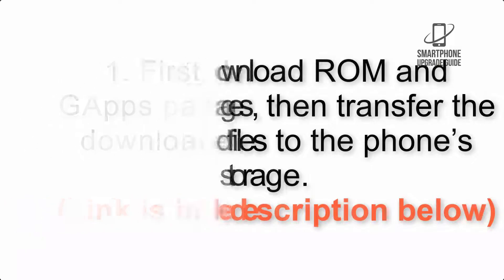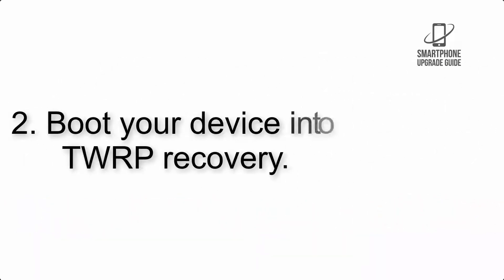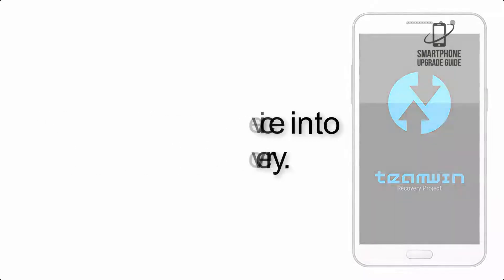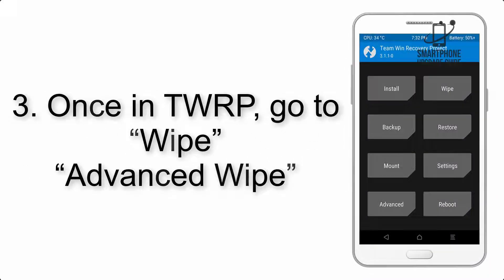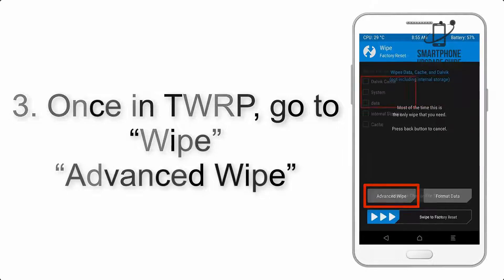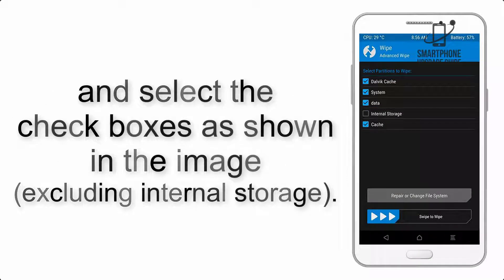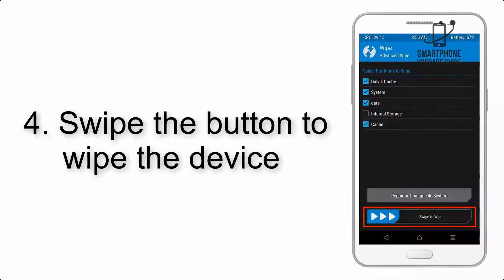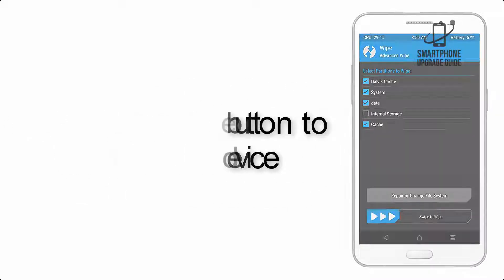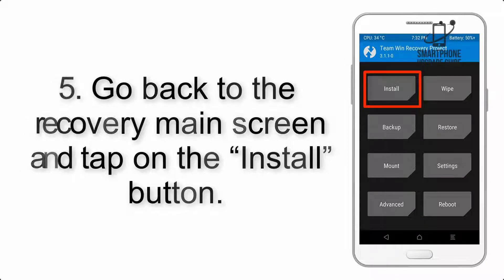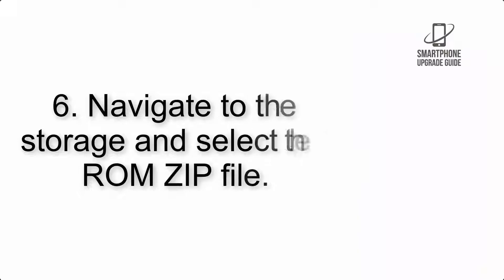Step 2: Boot your device into TWRP recovery. Once in TWRP, click on Advanced Wipe and select the checkboxes as shown in the image, excluding internal storage. Step 4: Swipe the button to wipe the device.